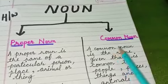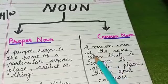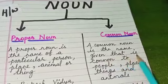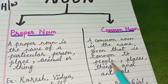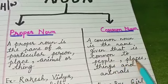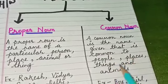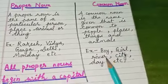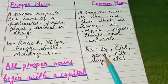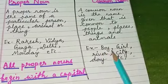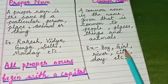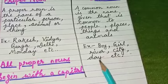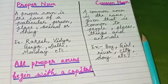A common noun is the name given that is common to people, places, things, and animals. Examples of common nouns are: boy, girl, river, city, day, etc.